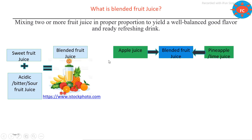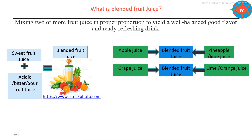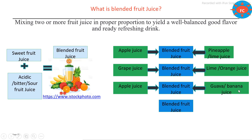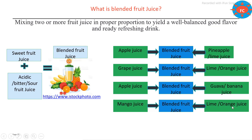You can see these examples: blending of apple juice with pineapple or lime juice; blending of grape juice with lime or orange juice; blending of apple juice with guava or banana juice; and blending of mango juice with lime or orange juice. In this way we can prepare sweetened blended fruit juice or 100% natural blended fruit juice. The label must declare what percentage of each added fruit juice is present.